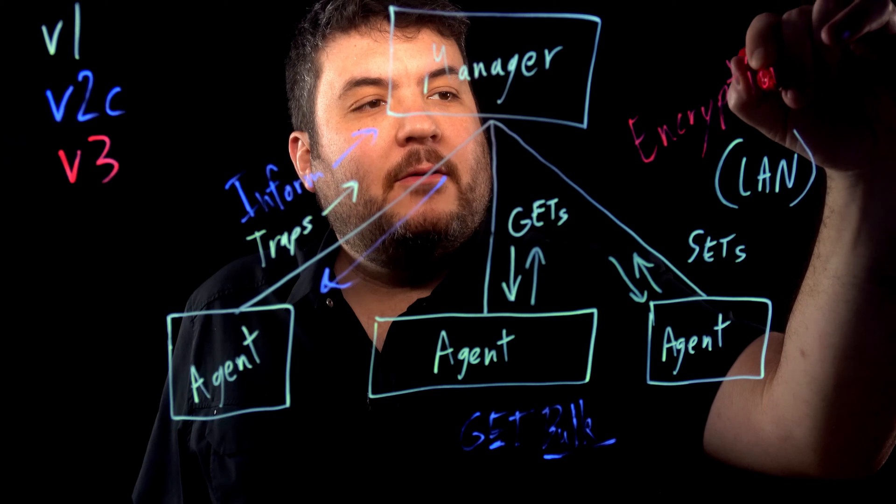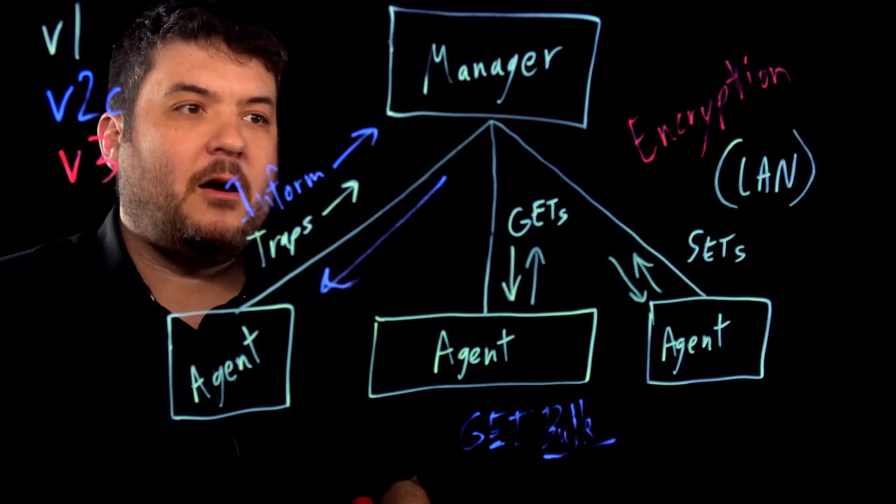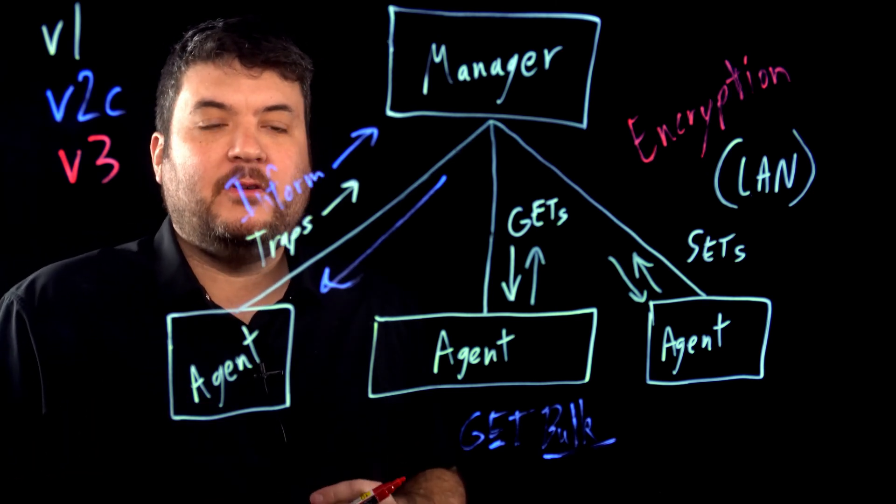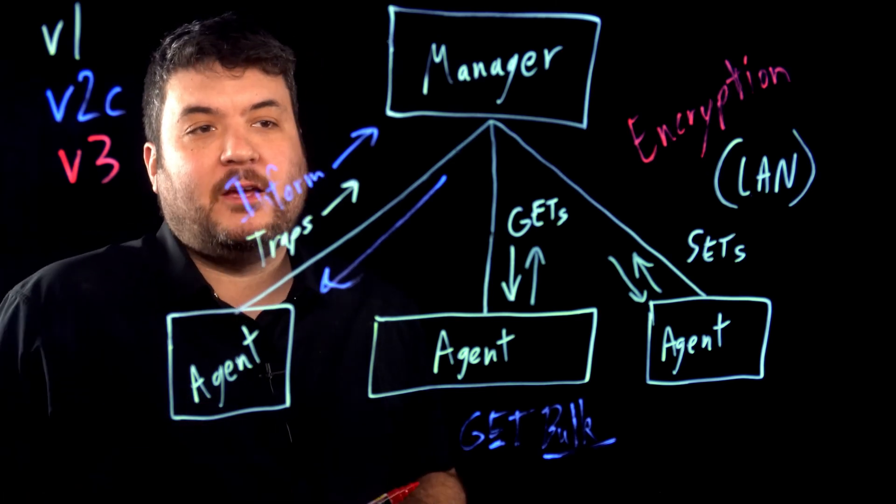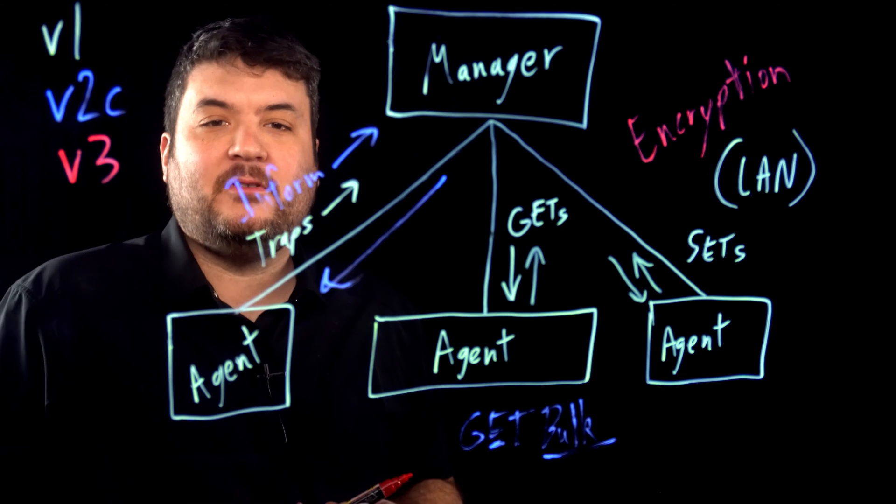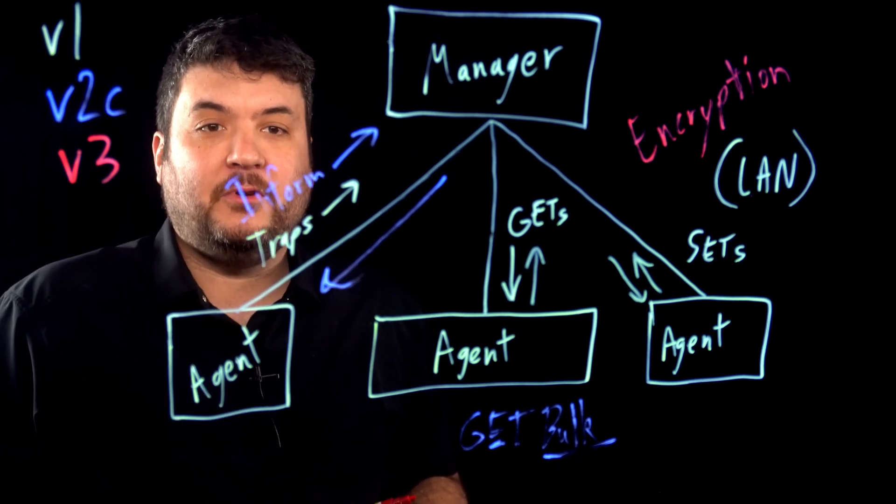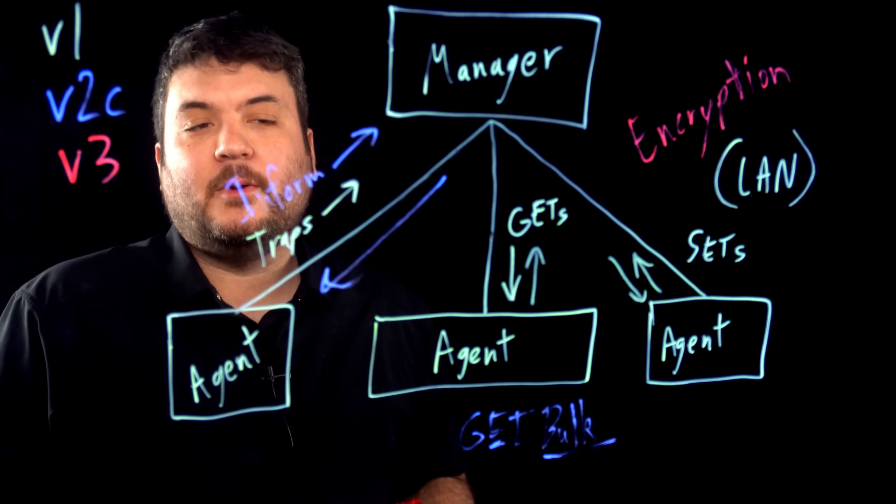So with v3, you're getting encryption. And you'll see a variety of different concepts under there. There's authentication, privacy settings, and different quasi passwords. SNMP, in earlier versions, had what was known as the community string. But that was just a very, very basic kind of simple password. It wasn't actually true encryption. Whereas with v3, you're getting something that's much more secure.